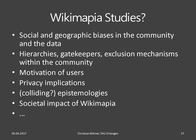I'm concluding with an incomplete list of open questions and an appeal for more studies on Wikimapia. In addition to geopolitical conflicts and economic aspects discussed earlier, we know too little about social and geographic biases in both the data and the community. We know little about hierarchies, gatekeepers, or exclusion mechanisms in the community, or what motivates users to contribute. What privacy implications does the platform have? To what extent do different epistemological approaches coexist or are they contested between users? And last but not least, what impact does Wikimapia unfold — who uses it and for what purposes?